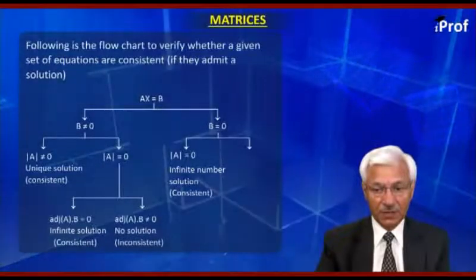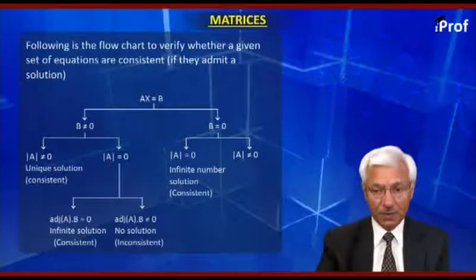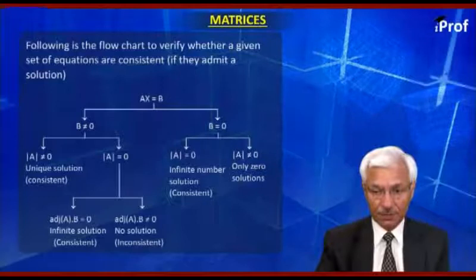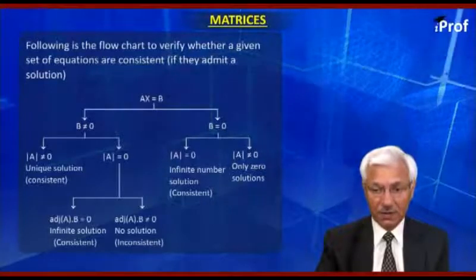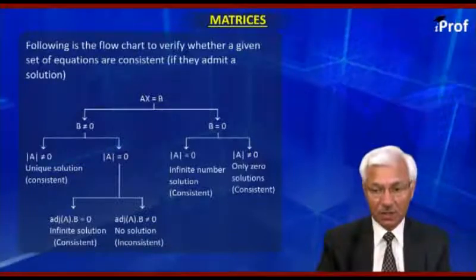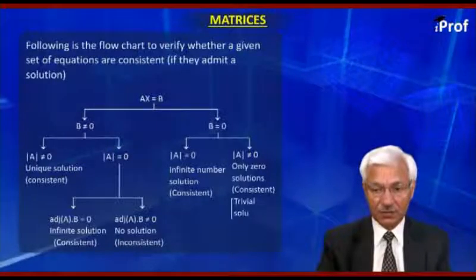But if determinant of A is not zero, then only zero solution is possible. Even then, the equations are said to be consistent. This zero solution is also called trivial solution.